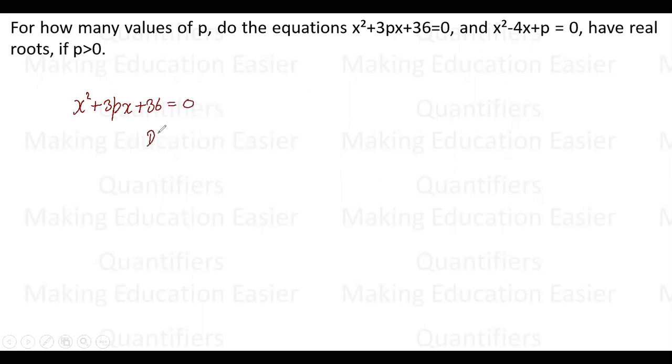Now p is greater than 0, I have to maintain this throughout. Let us solve it. So what is the condition? D is b² - 4ac greater than or equal to 0.